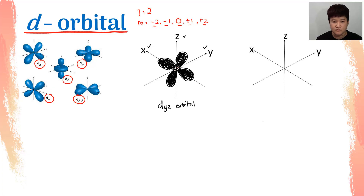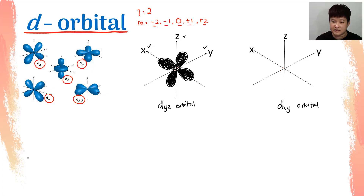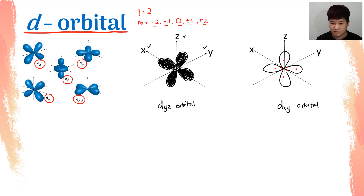Next, I have the DXY orbital. DXY orbital means that your cloverleaf shape will be sitting in between the X and the Y axes. So that is my X, that is my Y — in between. Draw the loops in between X and Y. Shade them off so you can clearly see the position of the loops, and that is where your cloverleaf should be located between X and Y.